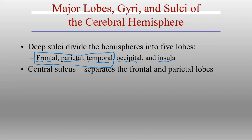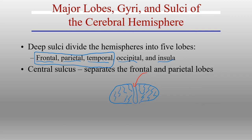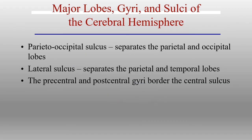Between the frontal lobe and the parietal lobe, we have what we call the central sulcus. The central sulcus is an important sulcus because it's the dividing line between the frontal lobe and the parietal lobe. It's also the one sulcus that goes all the way from the longitudinal fissure down to the lateral sulcus, and it's the dividing line between motor and sensory information in the gyri there.